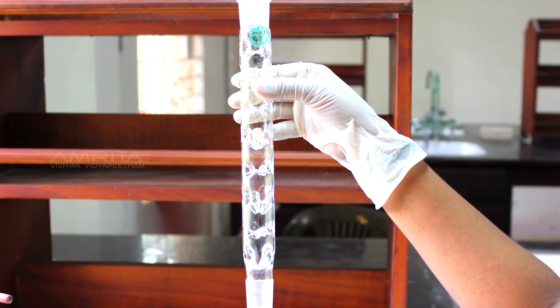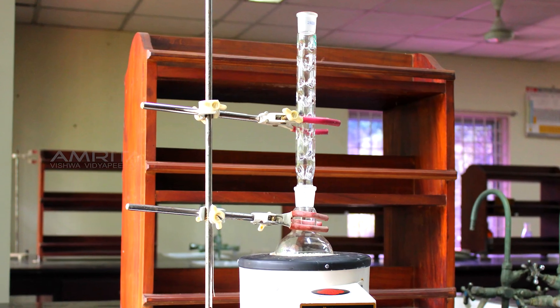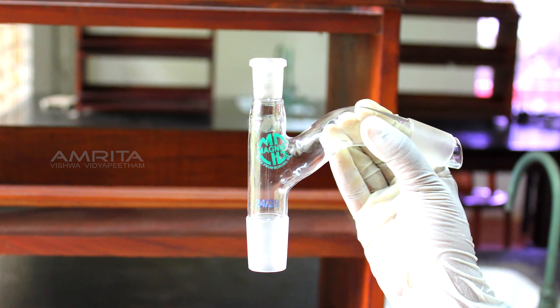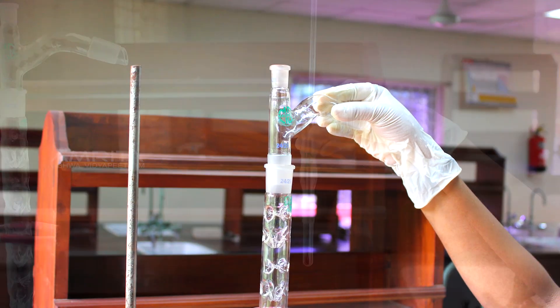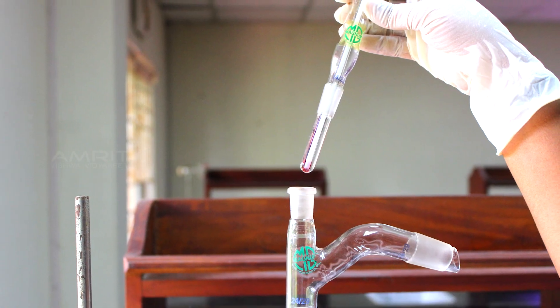Now, connect a fractionating column to the RB flask and clamp it. Connect a distilling head to the fractionating column and a thermometer adapter containing thermometer to the distilling head.